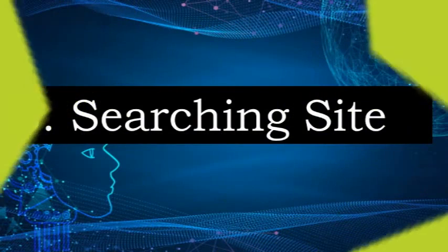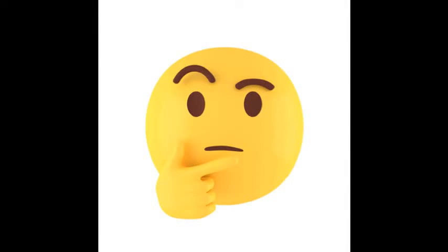Number 6: Searching by site. The site: operator finds webpages from a specific website. There are millions of pieces of information that we can get from the internet. Some of this information is free, but others are not — they are protected by copyright law.